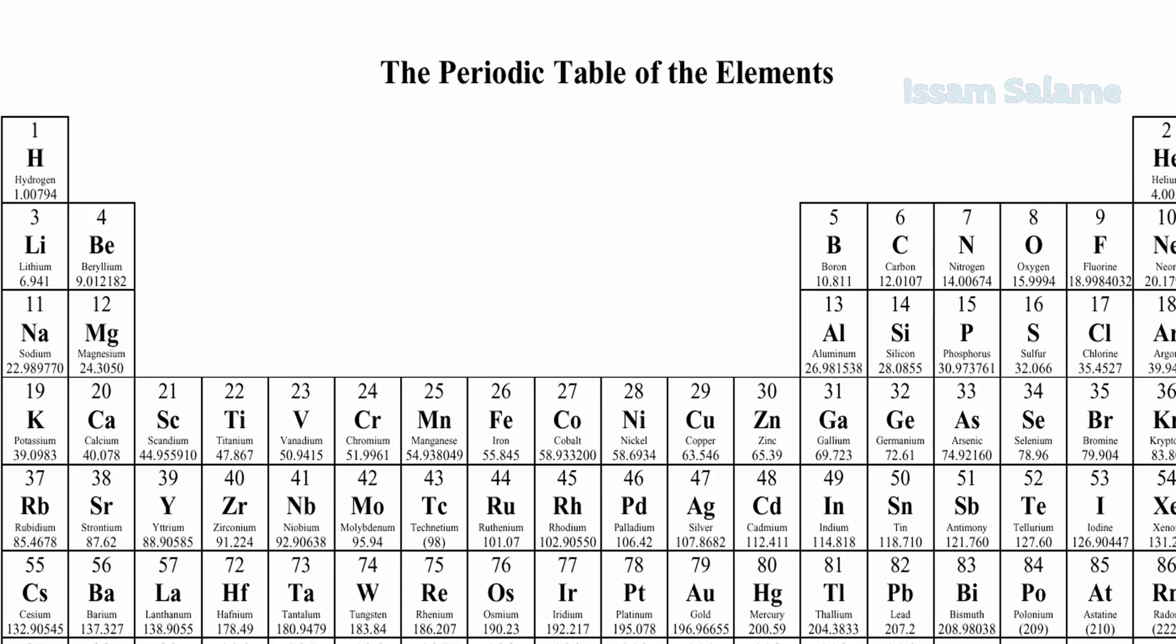As we can see, atomic masses of most of the elements on the periodic table are not exact whole numbers, and this is because most elements are mixtures of isotopes. What do you mean by isotopes? Let me explain.